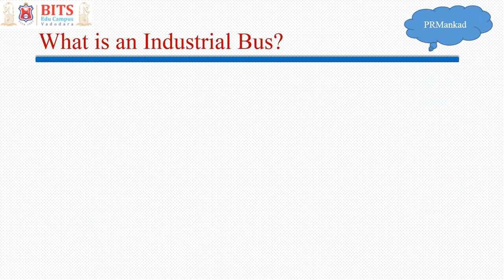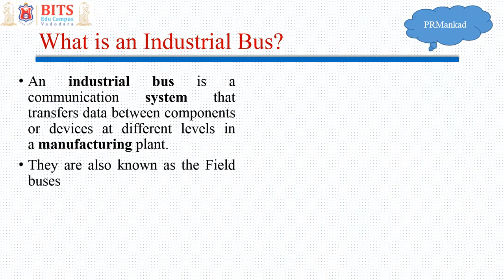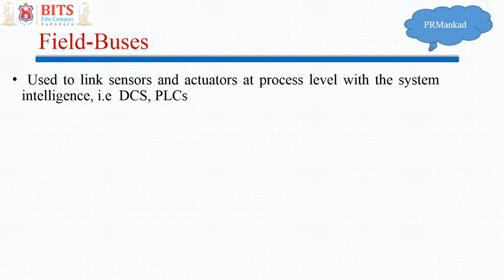An industrial bus is a communication system that transfers data between components or devices at different levels in a manufacturing plant. They are also known as field buses. As we've already seen in the architecture part, there are level zero sensors, then automatic control, supervisory control, production level control, and enterprise level. For communication between all these different levels, we need a communication system — known as the industrial bus or field bus.